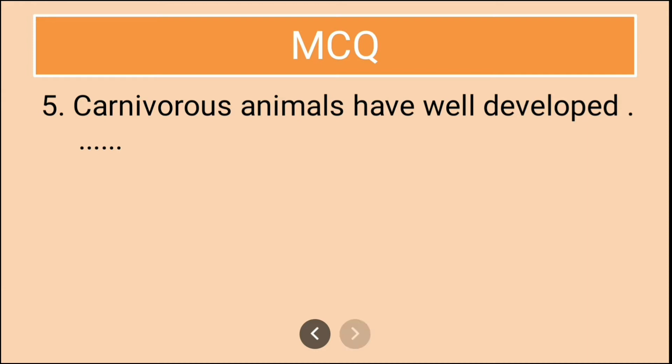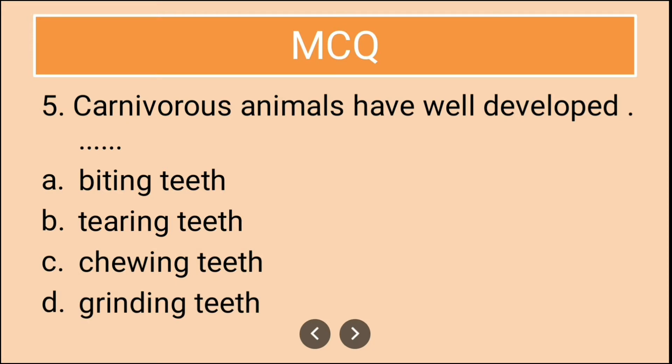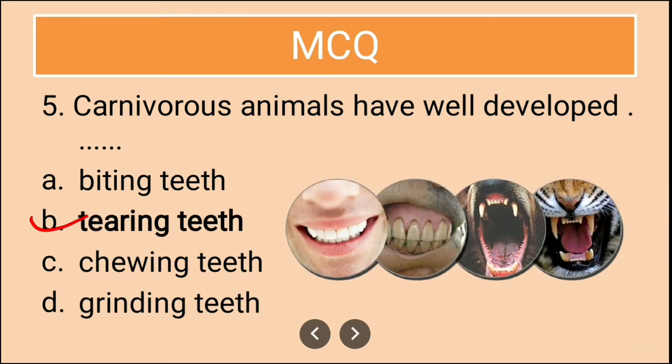The fifth question: carnivorous animals have well-developed dash. The options are biting teeth, tearing teeth, chewing teeth, and grinding teeth. Carnivorous animals have well-developed tearing teeth, because they need to tear flesh. Nature has given them this feature.